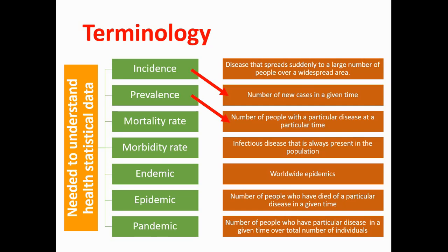Mortality rate is the number of people who have died of a particular disease. Morbidity rate is the number of people who have a particular disease in a given time over the total number of individuals — so morbidity rate is prevalence over total population number. Endemic is an infectious disease that is always present in the population; for instance, tuberculosis is an endemic disease in many countries with poor sanitation. Epidemic is a disease that spreads suddenly to a large number of people over a widespread area — for example, influenza epidemics or Ebola epidemics mainly spread in Africa. And lastly, pandemic is almost the same as epidemic but worldwide — if epidemic spreads over a large area, pandemic spreads over the whole world.